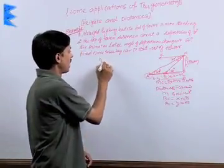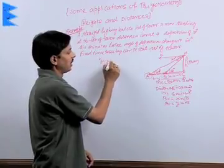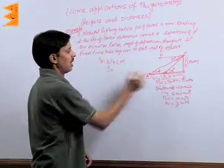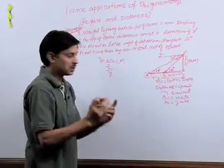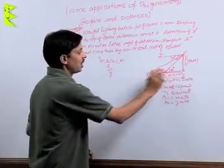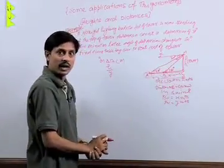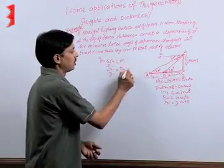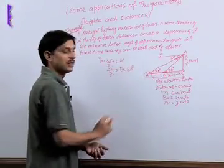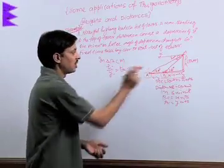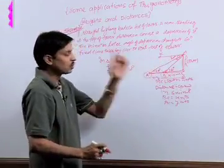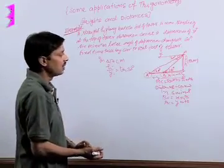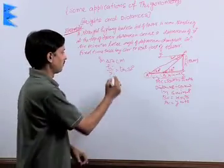In triangle ACM, the height is H and AC is Y. Perpendicular upon base is known as tan theta, and theta in this situation is 30 degrees as mentioned, because the depression is 30 degrees. Elevation has to be 30 degrees because of the co-interior angle property.